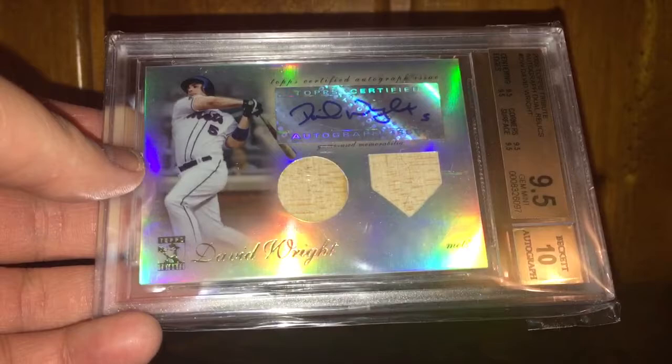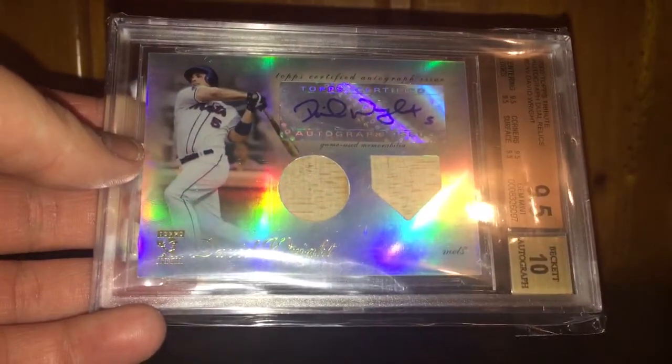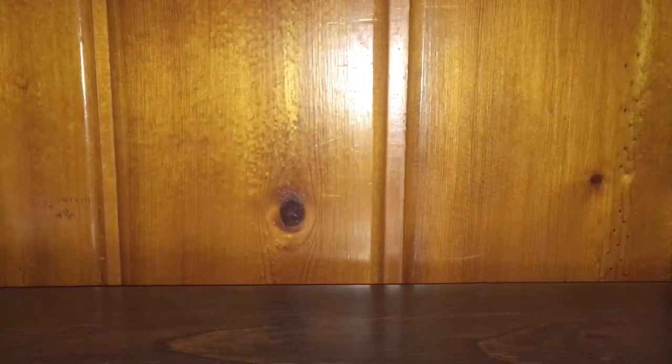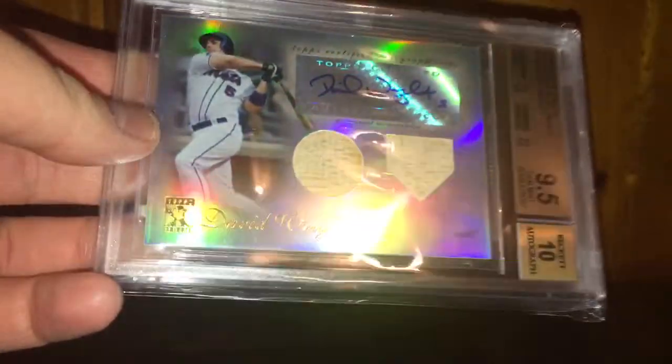Nice shine to this one. Out of Topps Tribute, David Wright dual bat autograph graded BGS nine point five, ten with all nine fives, number two ninety-nine. So that's a really really nice card.